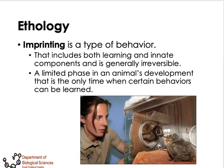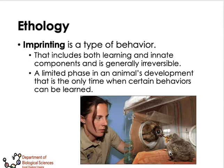Imprinting is a type of behavior that includes both learning and innate components and is generally irreversible. It is commonly applied to birds, especially endangered species like the Philippine Eagle. In the process of imprinting, a mother figure is used to help the young eat. For endangered animals, an imprinting process is used where a particular object provides the young its food. Imprinting occurs during a limited developmental phase — the only time when certain behaviors can be learned.